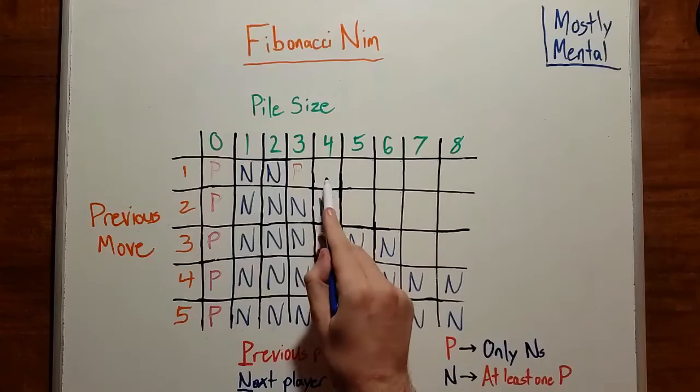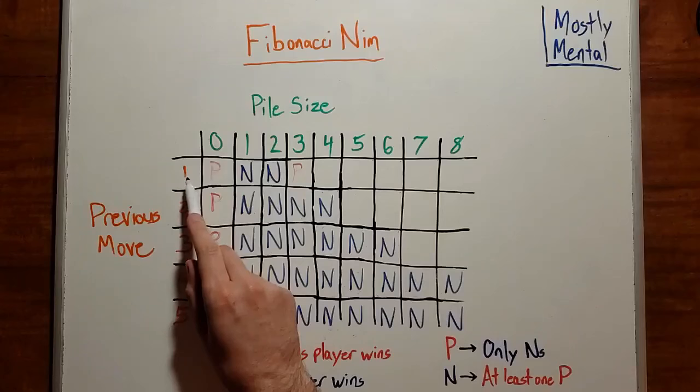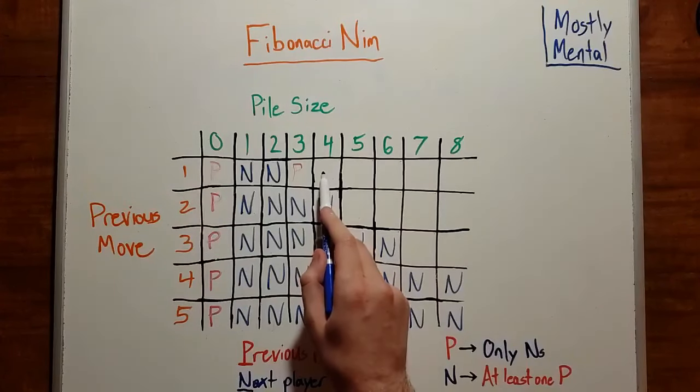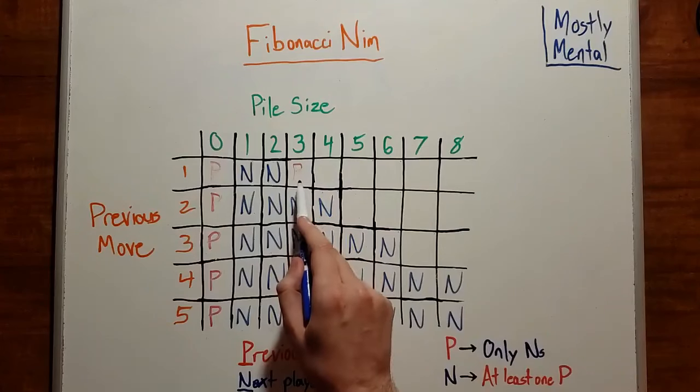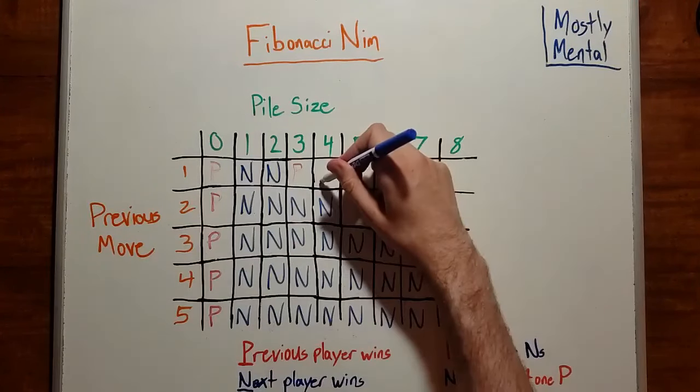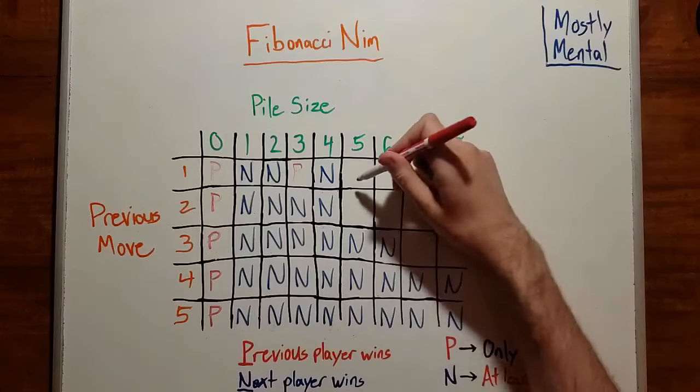On the other hand, for a position like this with pile size 4 and previous move 1, the player can remove 1 to end up with a pile size of 3. And that's a P position, so this must be an N position. And continuing in this fashion, we can fill in the rest of the table.